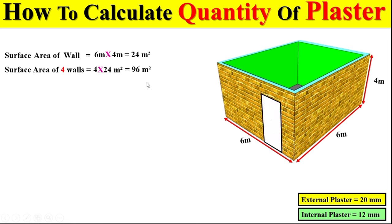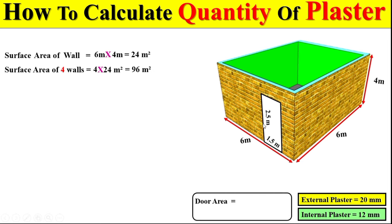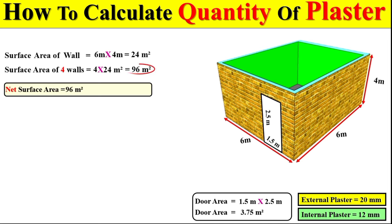We subtract the total door area from the total external surface area. Let's suppose the width of the door is 1.5 meters and the total height of the door is 2.5 meters. To calculate the total door area, we multiply the total width by the total height. Then we subtract this door area from the total external surface area to get the net external area of this room.